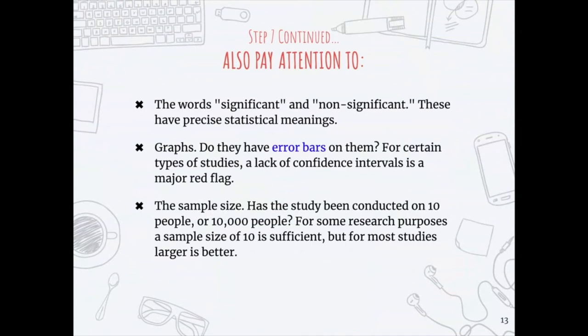In step seven, there are a few things to pay closer attention to. The words 'significant' and 'non-significant' have precise statistical meanings — look those up if you're unfamiliar. Look at the graphs: are there any error bars? For certain types of studies, a lack of confidence intervals is a major red flag. Think about what you've learned in science classes and really evaluate how these factors affect the information you're reading.